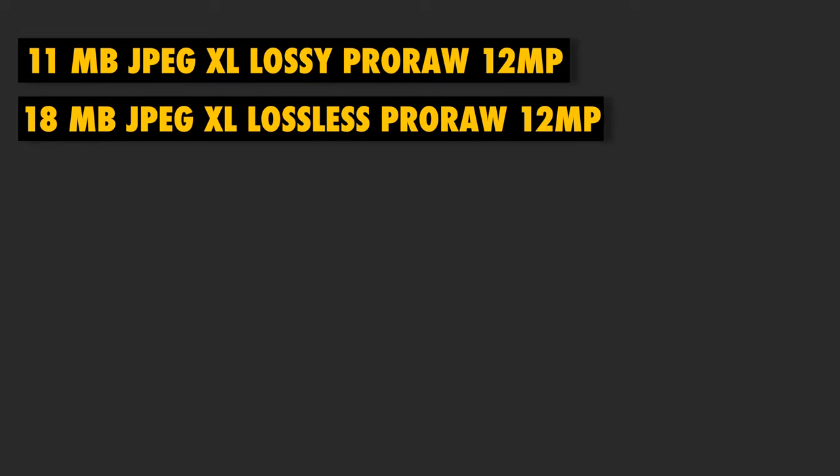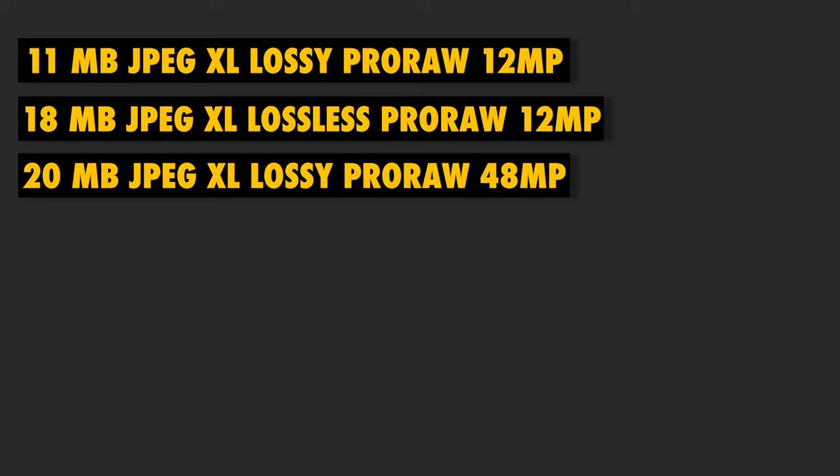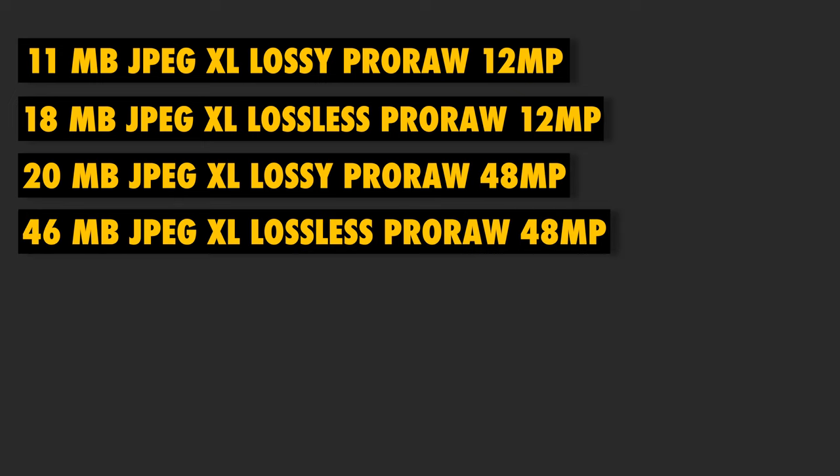One more thing I'll mention — this is from 9to5Mac's website. They posted the file types and sizes associated with these formats. Both Lossy and Lossless can be used in either the 12 megapixel or the 48 megapixel camera mode. Here are the rough file sizes: 11 megabytes for JPEG XL Lossy Pro Raw at 12 megapixels, 18 megabytes for JPEG XL Lossless Pro Raw at 12 megapixels, 20 megabytes for JPEG XL Lossy Pro Raw at 48 megapixels, and 46 megabytes for JPEG XL Lossless Pro Raw at 48 megapixels.